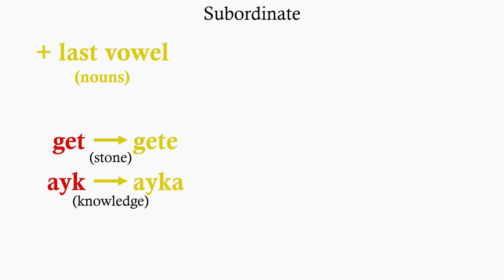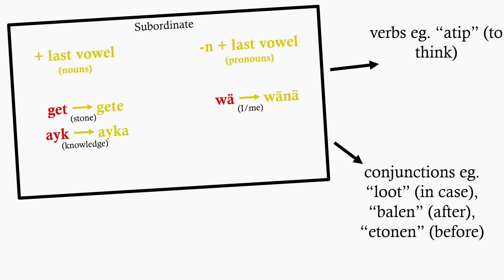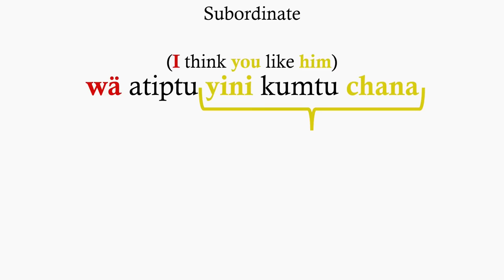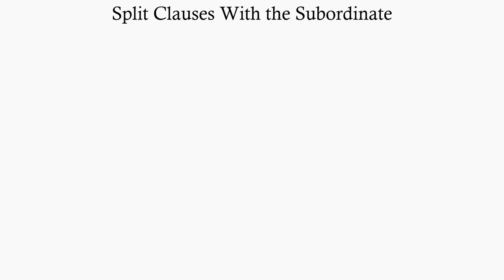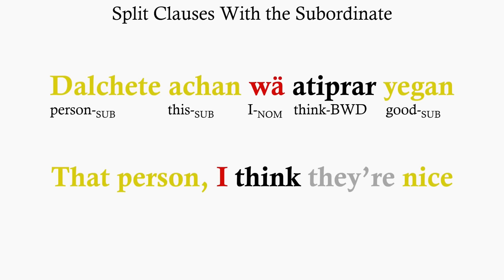Then there's the subordinate form, which is formed by adding the last vowel of the noun onto the end, so get becomes gette, eik becomes aika, or by adding en plus the last vowel onto a pronoun, so weh becomes wehne. This is triggered by certain verbs, conjunctions, and is used to avoid super complex nouns. It essentially makes words get grouped together into a single argument within the sentence, and it even allows certain subordinate clauses to be split, that person there, I think they're nice.